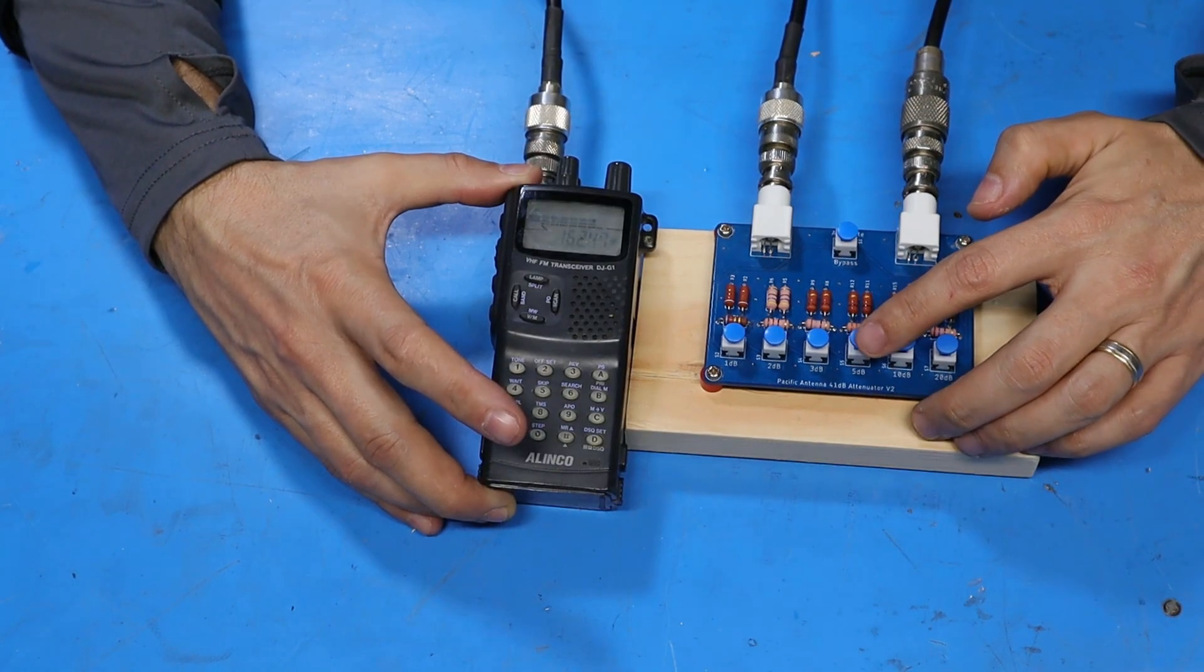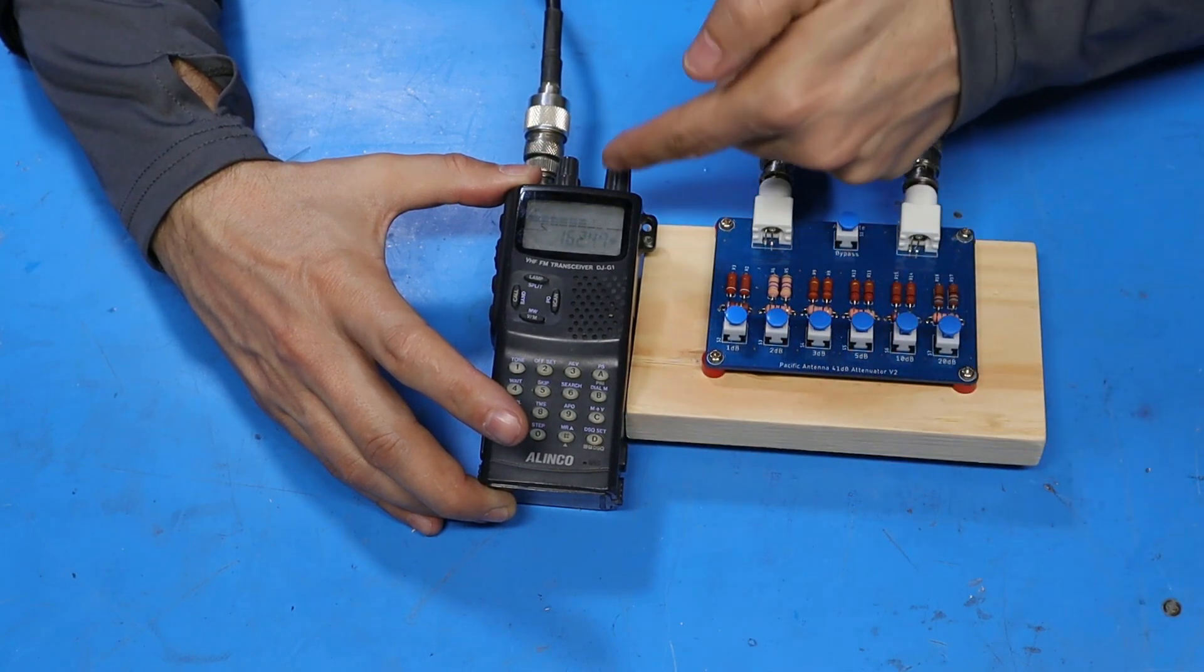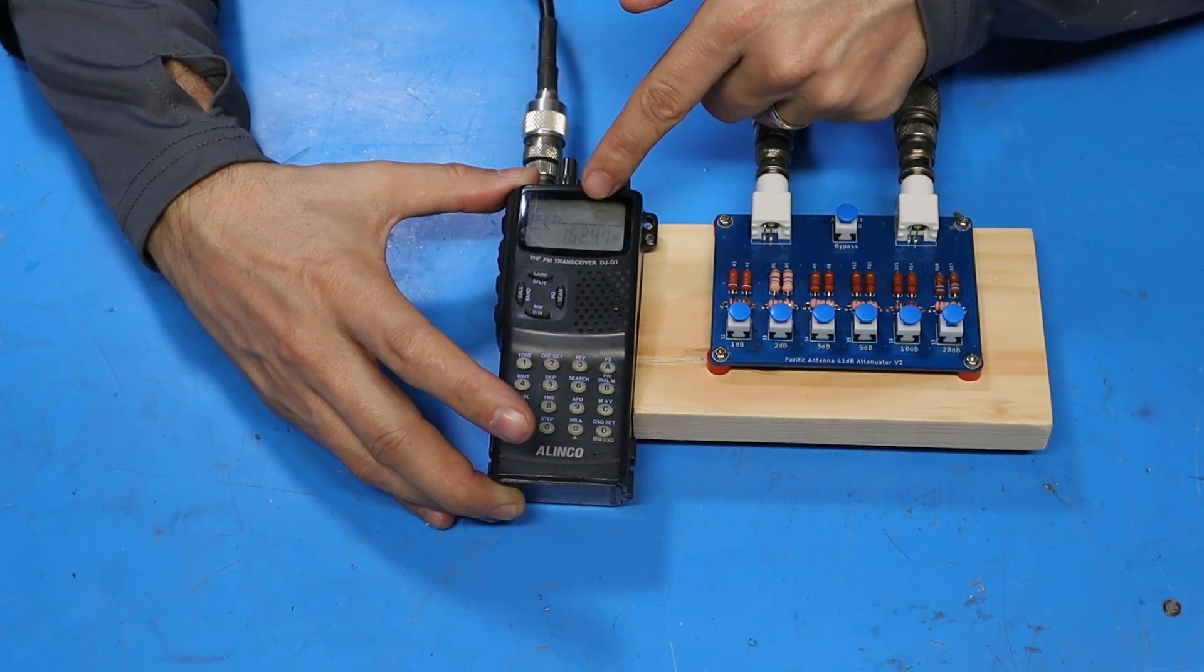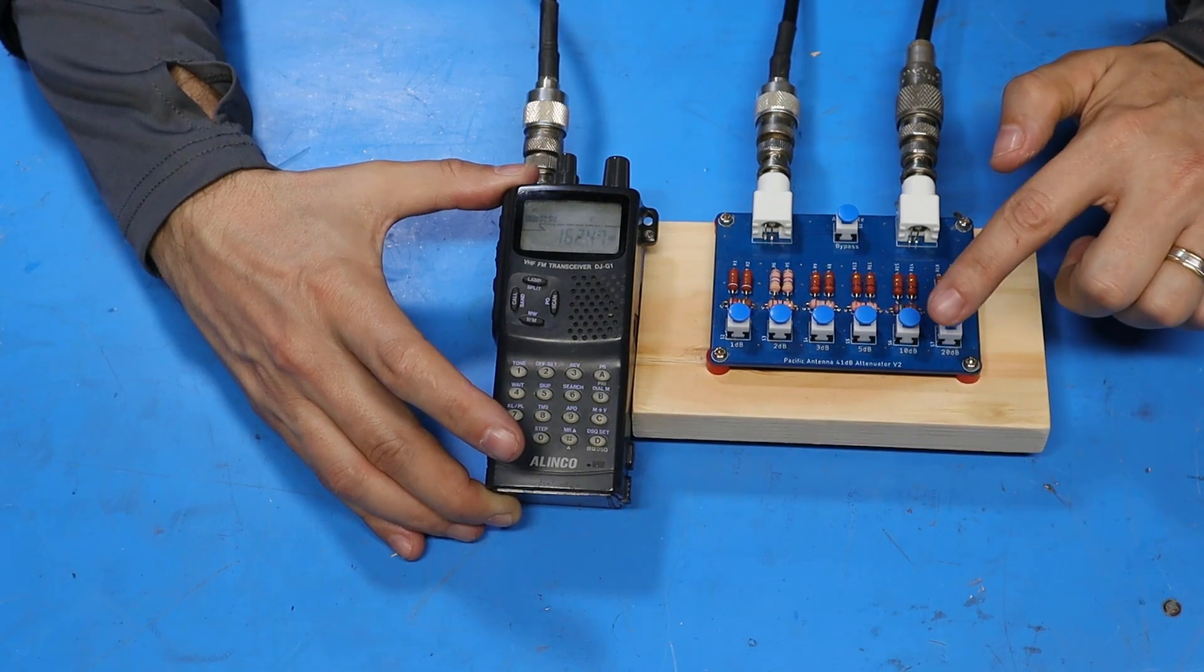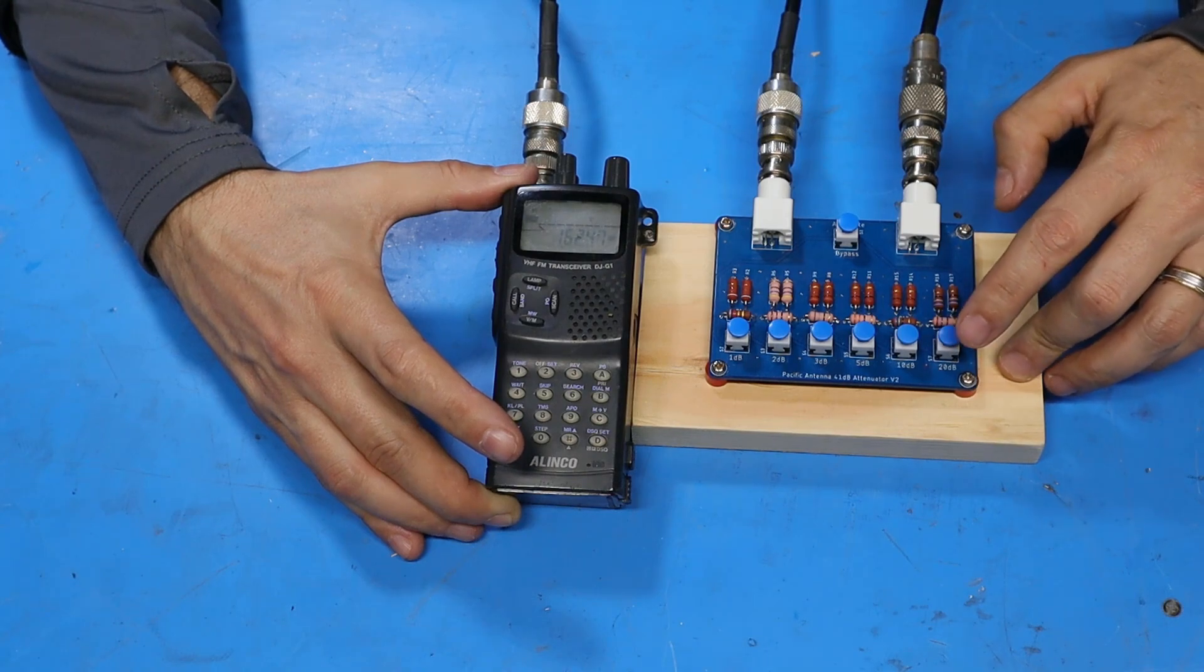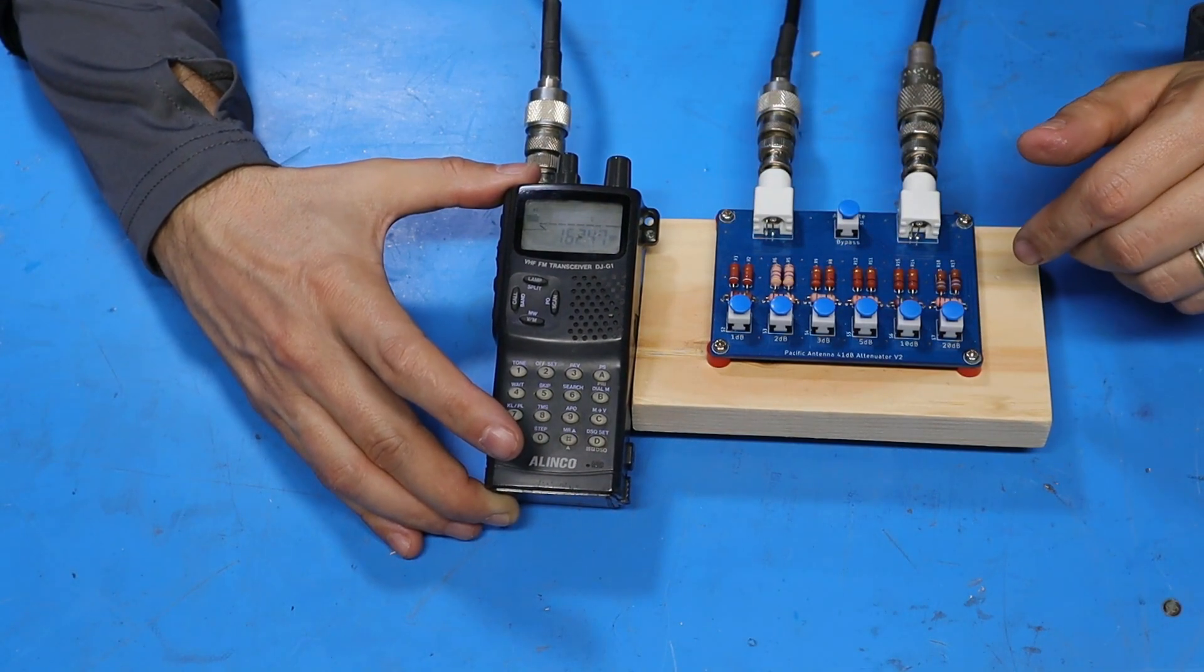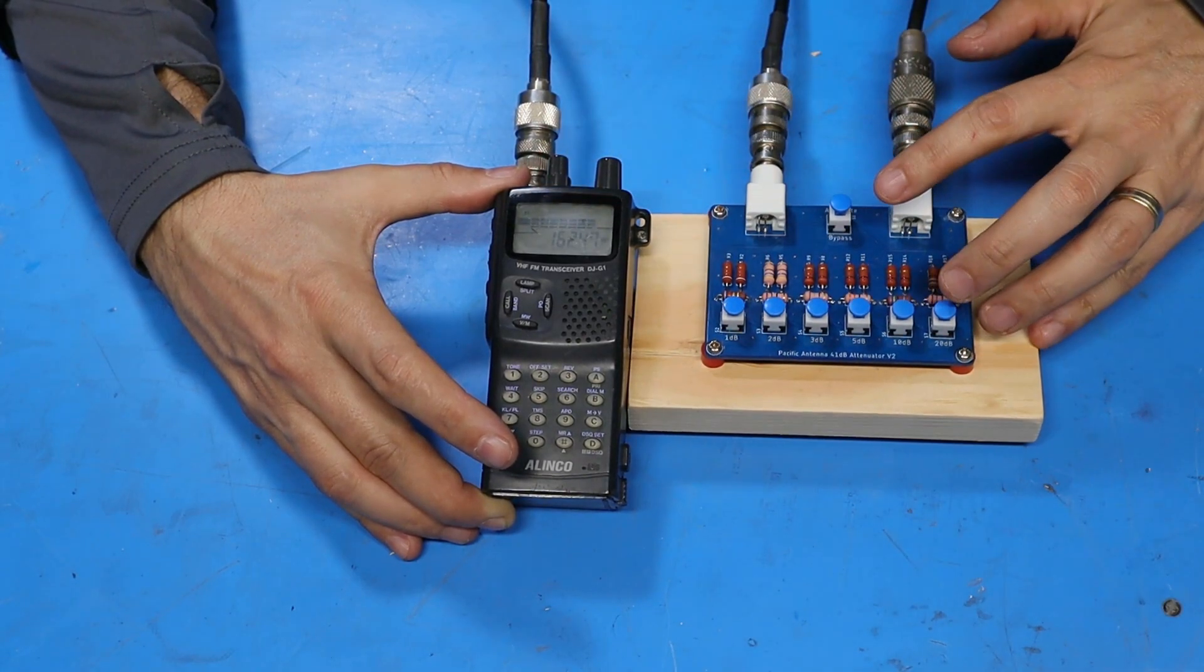The next stage is 5 dB which should be almost one S unit. Let's see if we lose another bar and it looks like we did. Now we're up to 10 dB, we should lose at least one more bar and it looks like we lost a few but that could be just the way the radio is calibrated. Now if I turn on the last one which is 20 dB we should lose the signal altogether. The radio is still receiving it to some degree but there's no signal left so this thing is doing what it's intended to do. Then you can see if I activate the master switch that bypasses the attenuator altogether and the signal comes back.